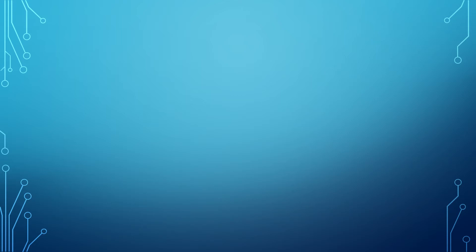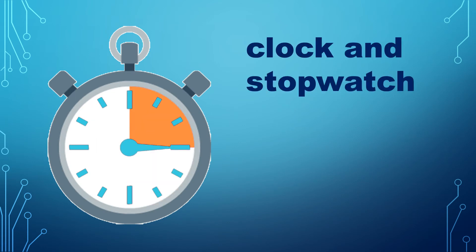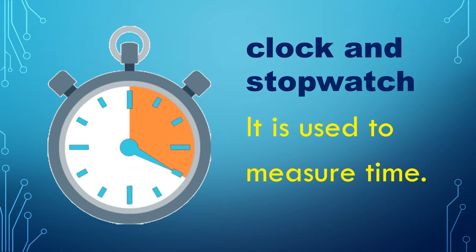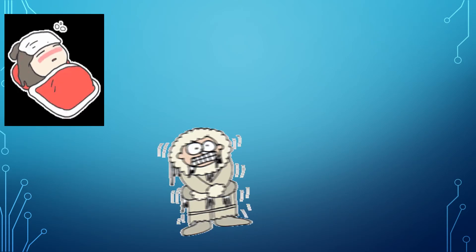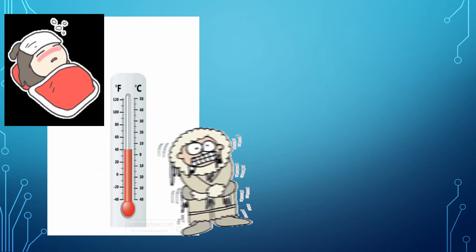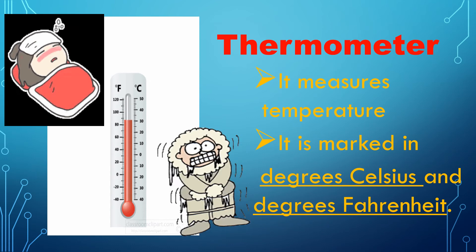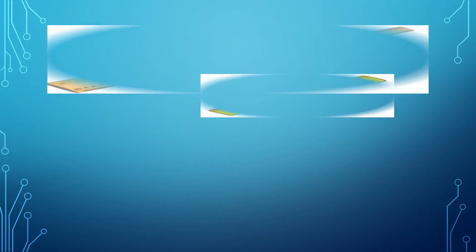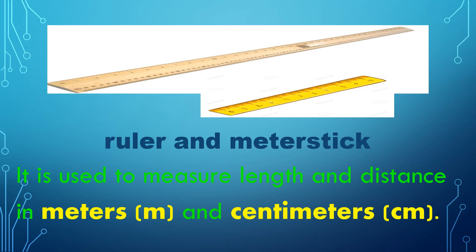Did you hear that sound? What do you think that was? If you said clock, you are correct! Clock and stopwatch are used to measure time. To measure how low or high temperature is, we use a thermometer. A thermometer is marked in degrees Celsius and degrees Fahrenheit. Scientists usually record data in degrees Celsius. Scientists use a ruler and meter stick to measure length and distance in meters and centimeters.